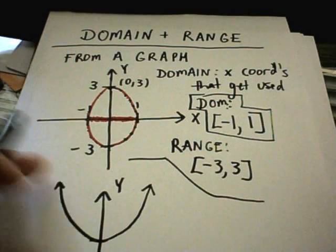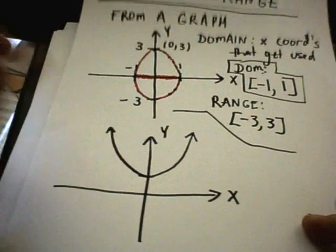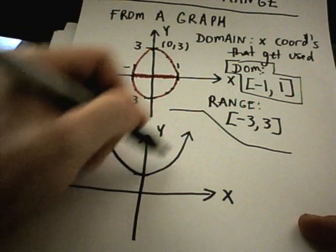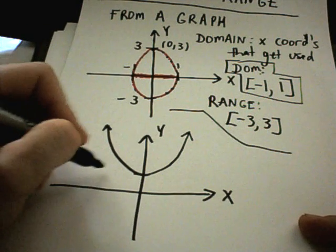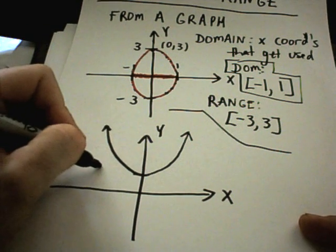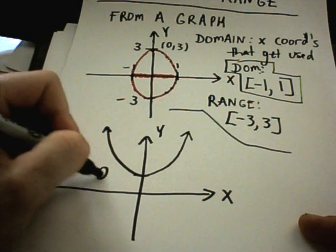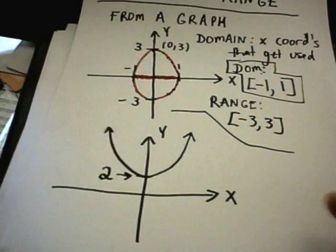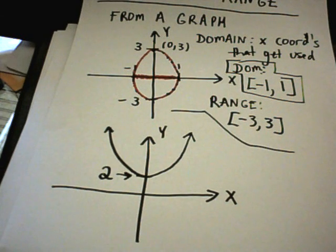So the range for that graph would be from negative 3 to positive 3, inclusive. Now suppose on this next example I have a parabola, and let's suppose that it's up here at the y-coordinate of positive 2.